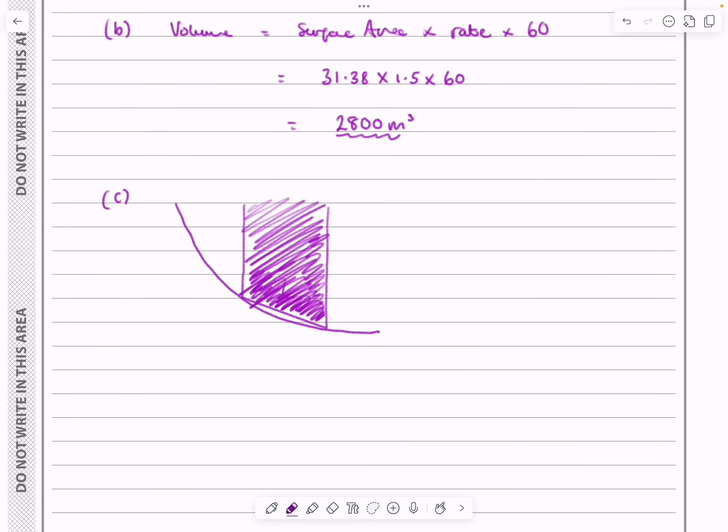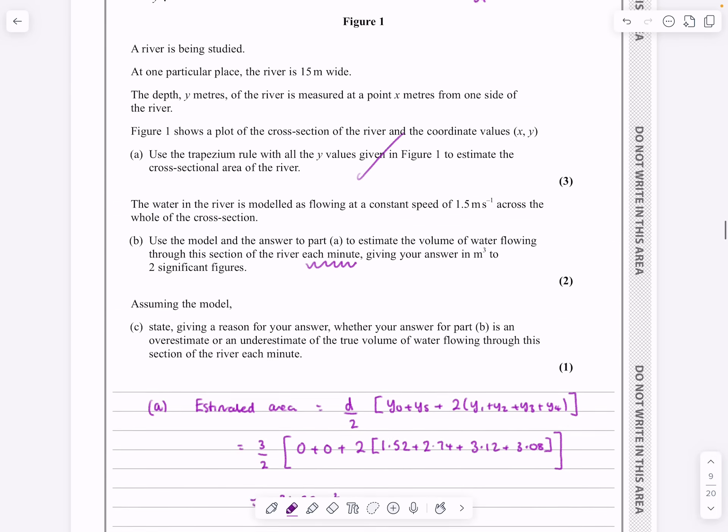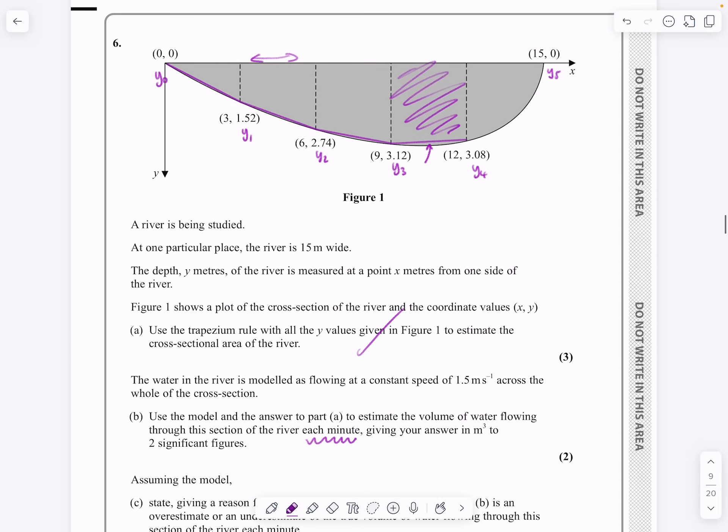And then just say, the approximation is an underestimate. And you could maybe say, yeah, shade that bit in. I've just pointed that there, but it's only worth one mark anyway, so it's really more explaining to you guys than worrying about what the examiner's going to think about that one.